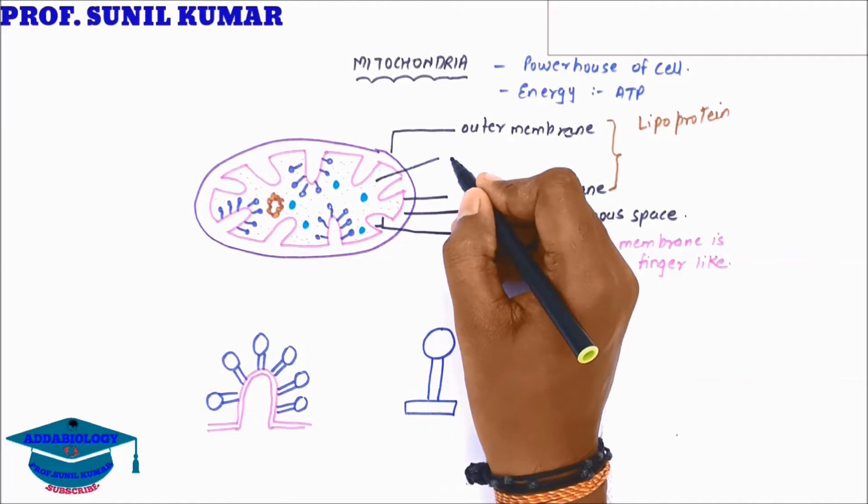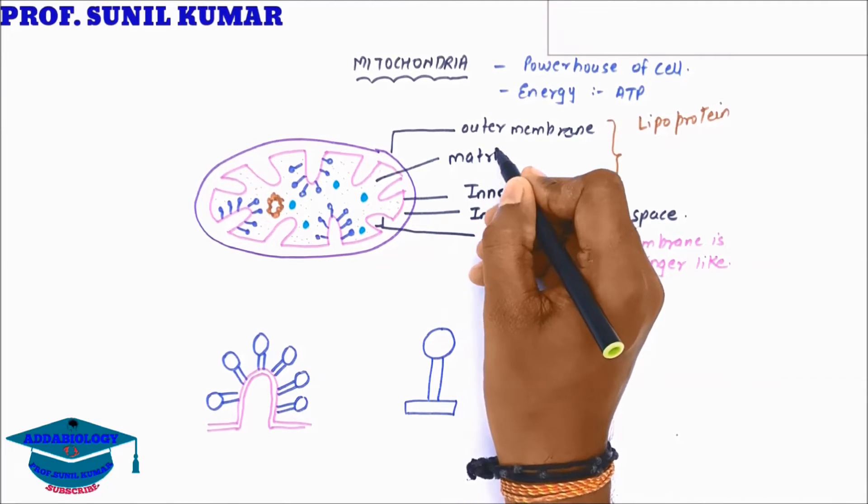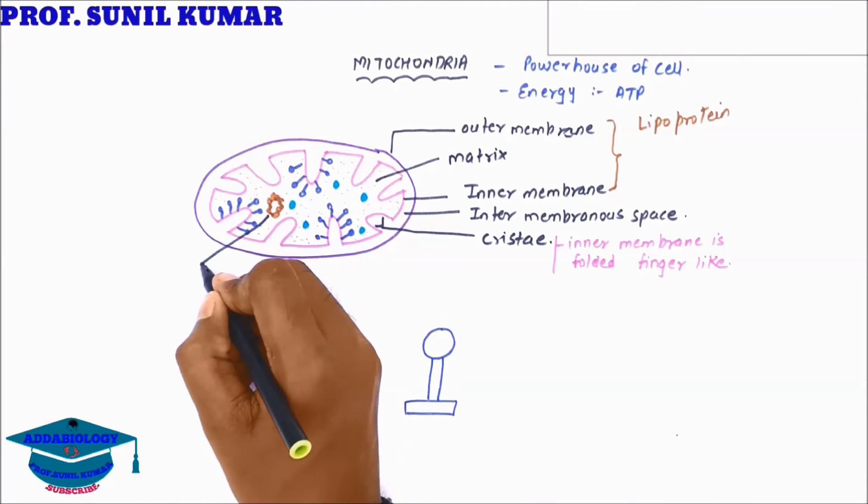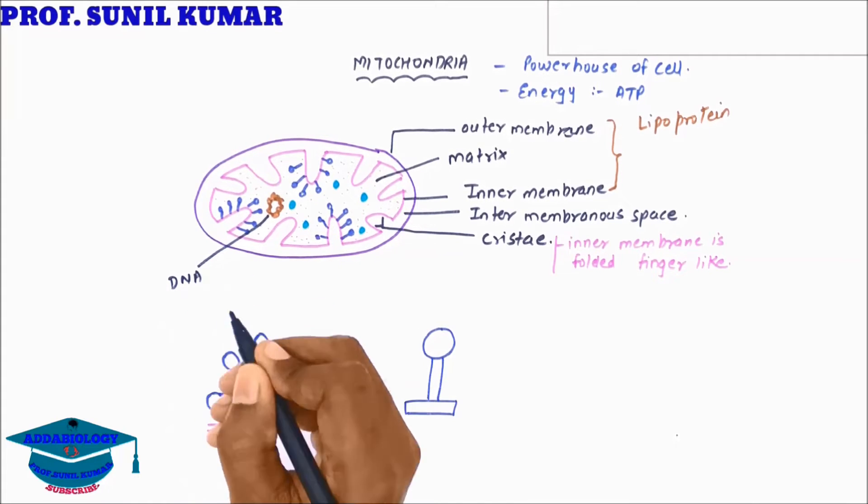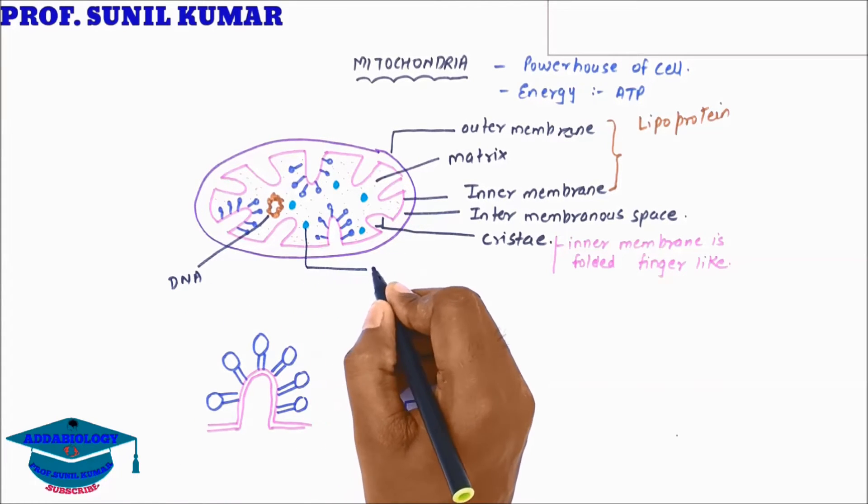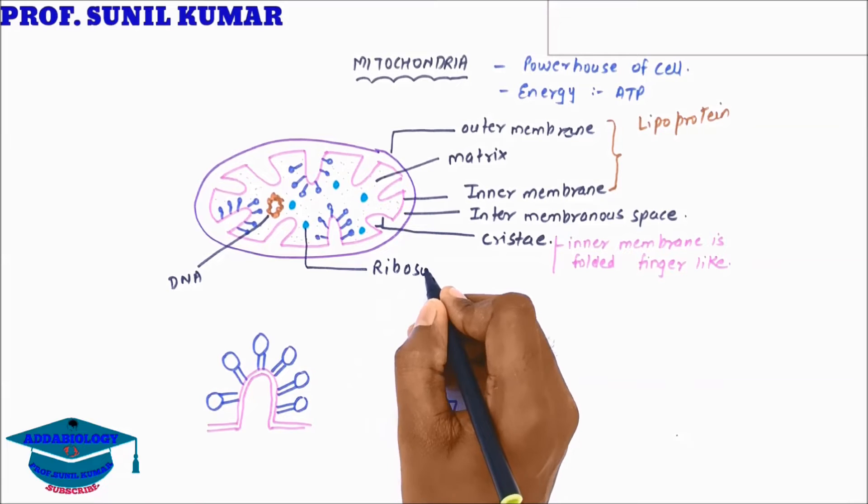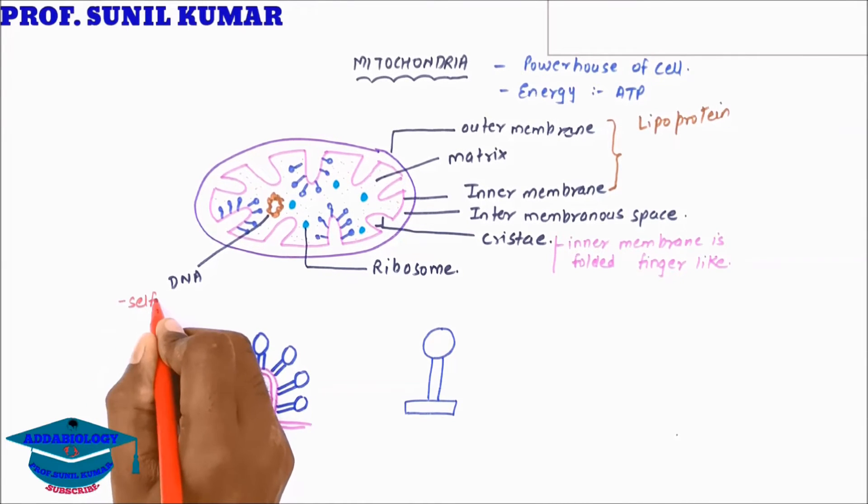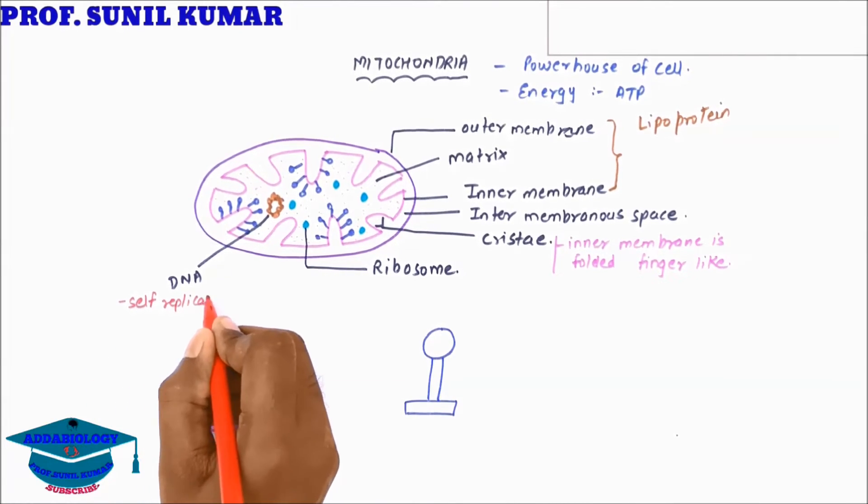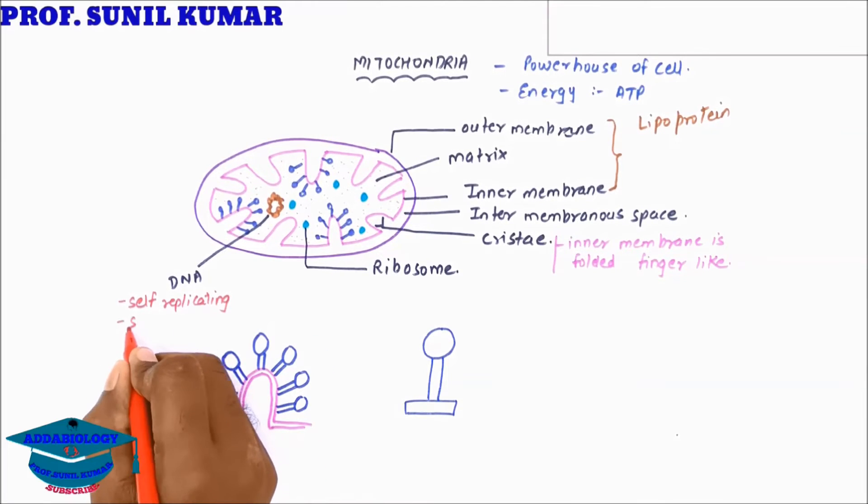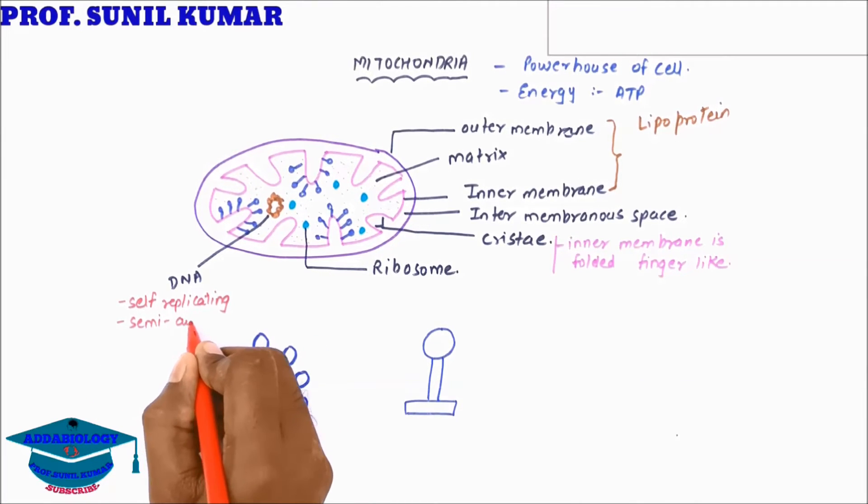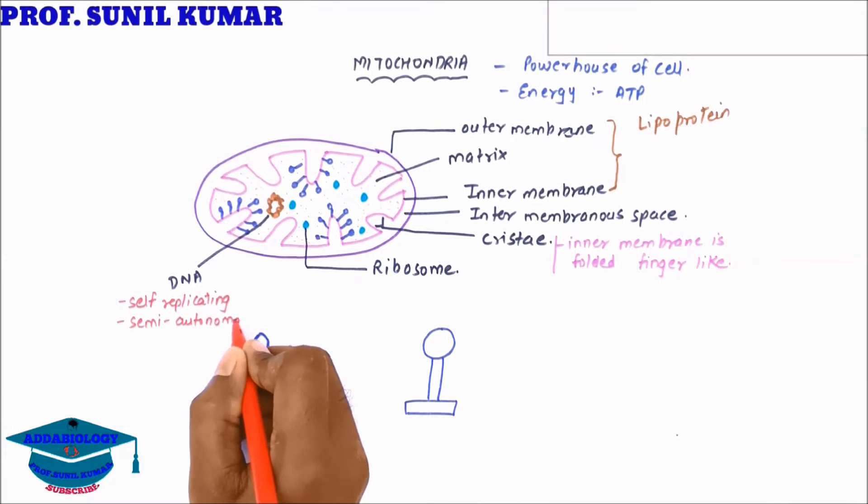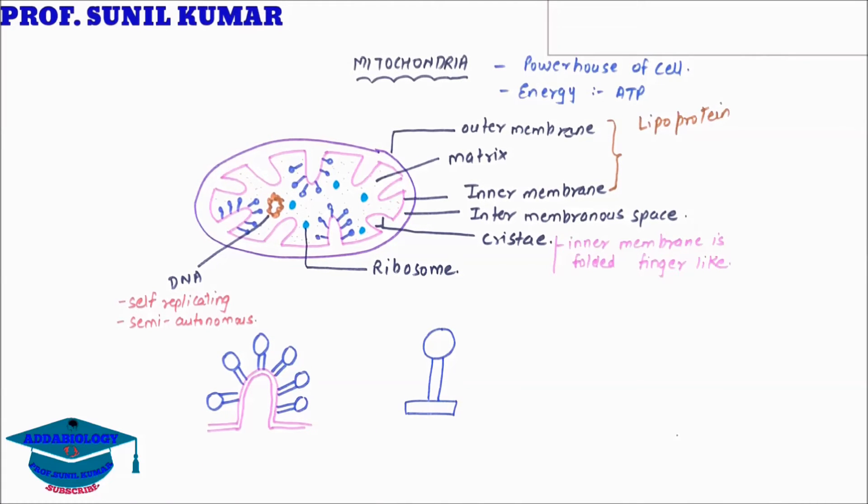Inside the mitochondria, there is a matrix filled with fluid. The matrix consists of DNA and ribosomes. The DNA is double-stranded circular DNA, and because of this DNA, the mitochondria is self-replicating and semi-autonomous. This means mitochondria can replicate on its own.